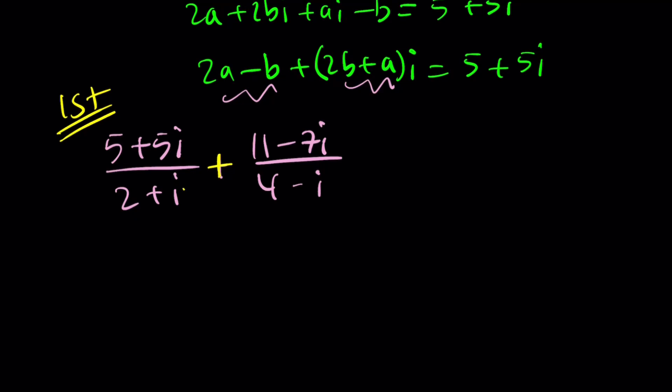So that's what we're going to do here. Let's multiply by 4 minus i, and here multiply by 2 plus i. Because we're trying to make a common denominator, right? Great.